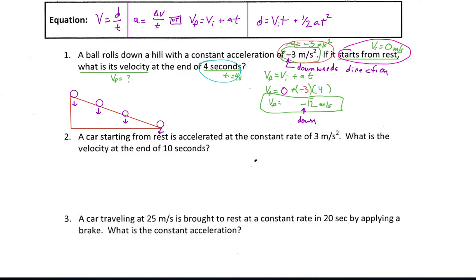Let's take a look at number two. We've got a car that's starting from rest, being accelerated at a constant rate of three meters per second squared, and we want to know what the velocity is at the end of 10 seconds. We're starting from rest, so I know I've got an initial velocity to deal with. It's being accelerated at three meters per second squared, so I have an acceleration. We want to know the velocity at the end of 10 seconds, so I'm looking for final velocity, and time is 10 seconds.